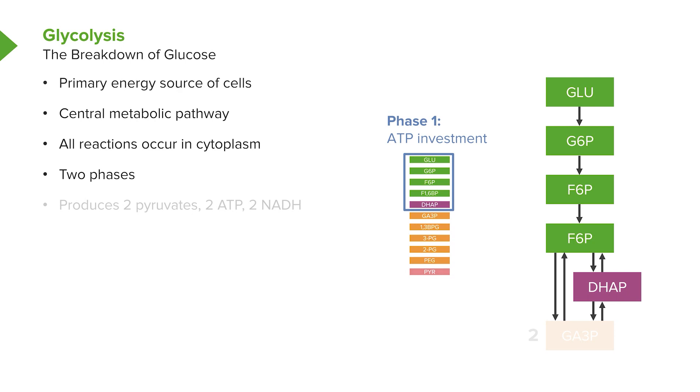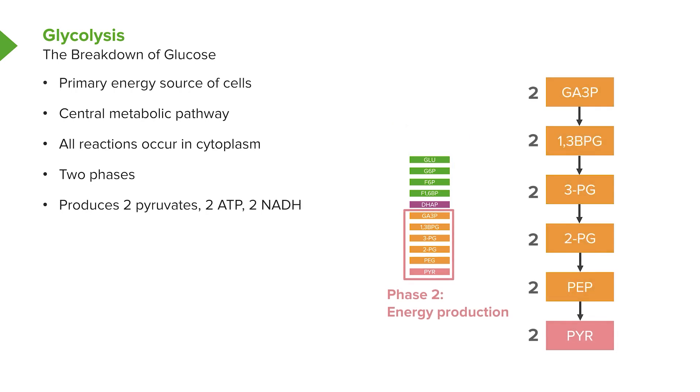Glycolysis occurs in two phases: a first phase in which ATP energy must be put into molecules to start the process. The ATP will be recovered later in the second part of glycolysis, where additional ATPs are made, reduced electron carriers are made, and two pyruvates are also made.